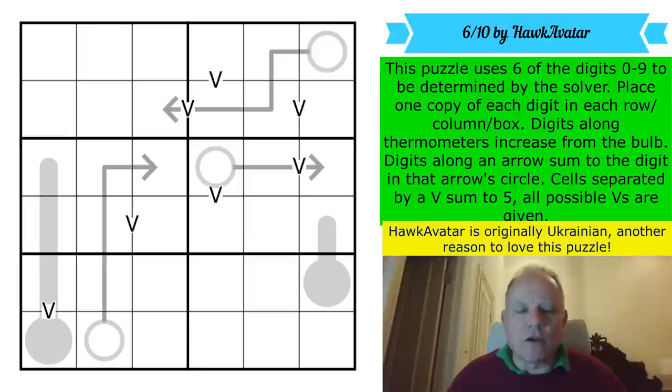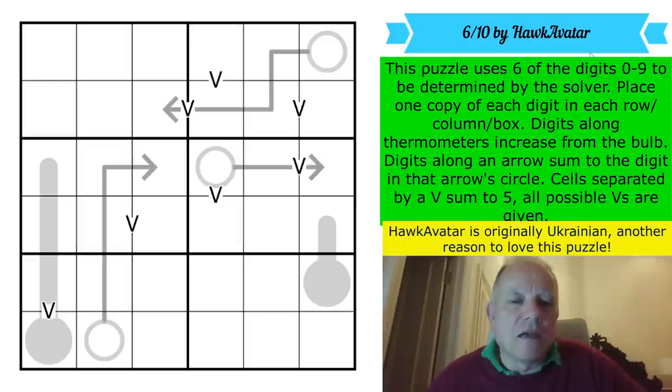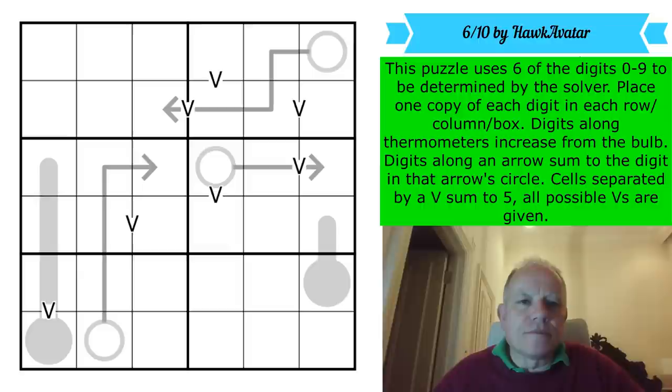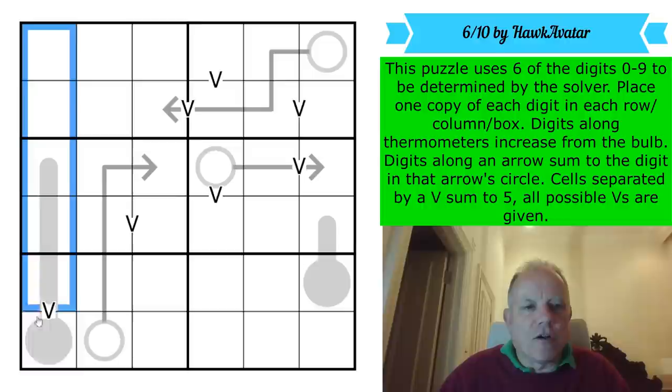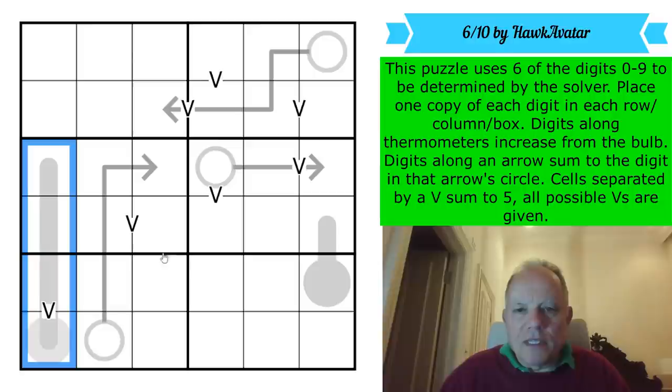This puzzle, though, it's six by six. But wait, normal Sudoku rules don't apply here because this puzzle uses six of the digits zero to nine. And the solver has to work out which ones. So that's why it's called six out of 10. That's not a grading for the puzzle. It's saying we're using six out of the 10 digits. So zero is a possibility here. You have to place one copy of each digit in each row, each column, and each box, whatever those six digits are.